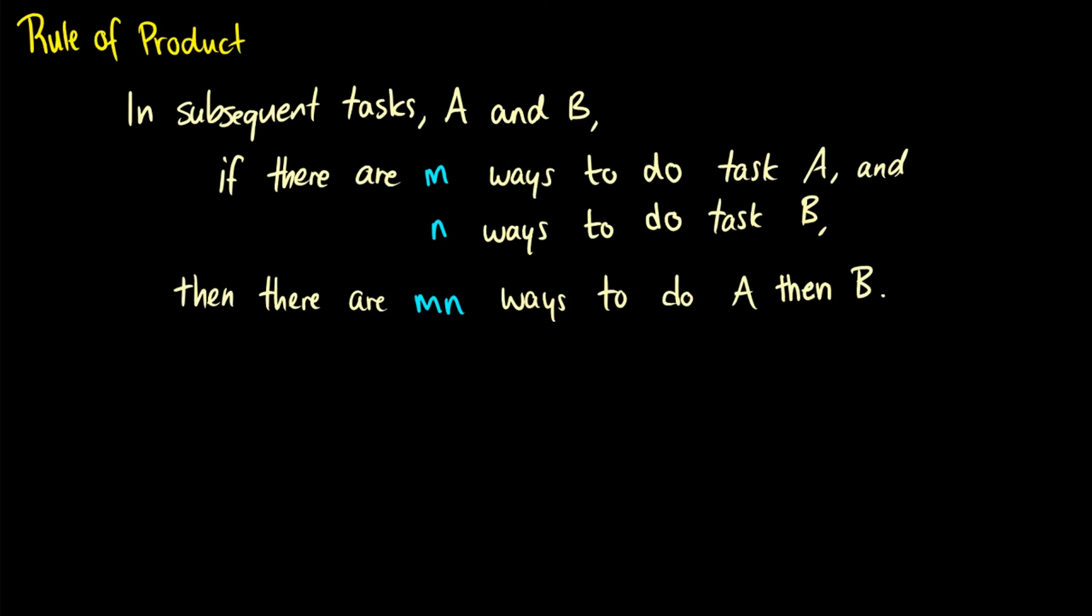Okay, now the rule of product is slightly different. We say here with the rule of product, in subsequent tasks A and B, if there are M ways to do task A and N ways to do task B, then there are M times N ways to do A then B. In other words, these are tasks that are done one after another. With the rule of addition, it's doing one task or another one. With the rule of product, it's doing them subsequently.